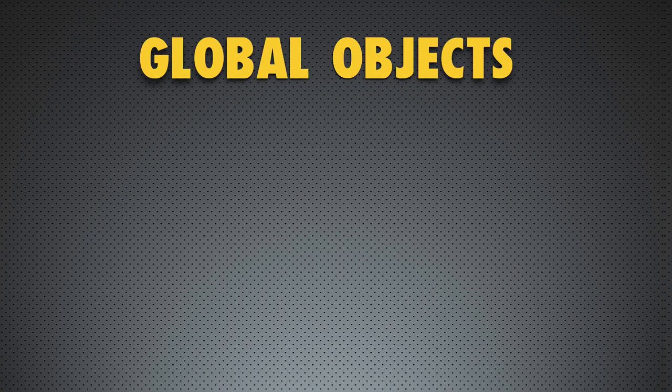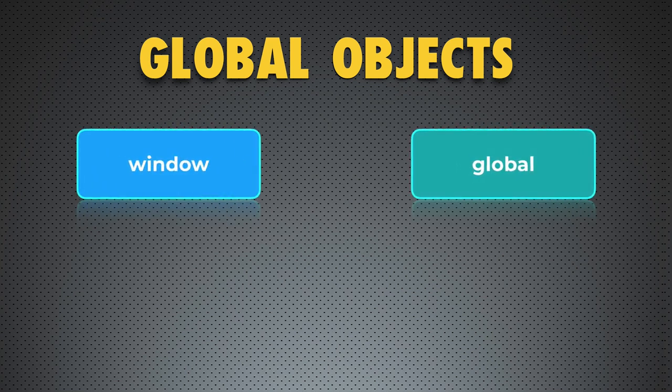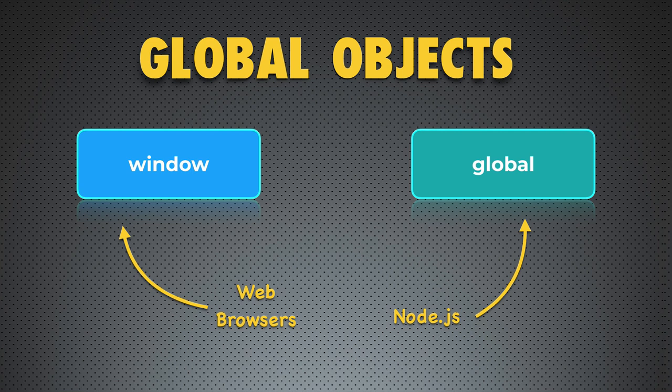Now you know a lot about objects — each object is simply a collection of name-value pairs. It's time to talk about so-called global objects. There are two of them: Window and global. Window is a global object in each web browser, and global is a global object in Node.js. Their purpose is to contain a long list of properties, and some of those properties contain nested objects. Let's now look at those global objects in action.